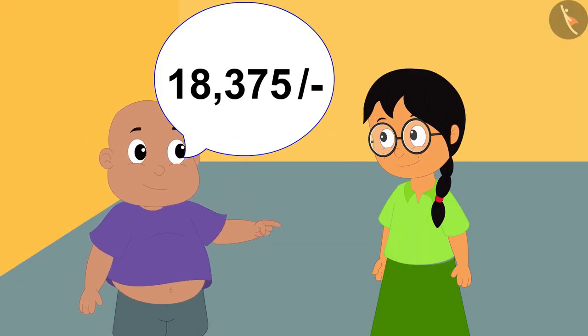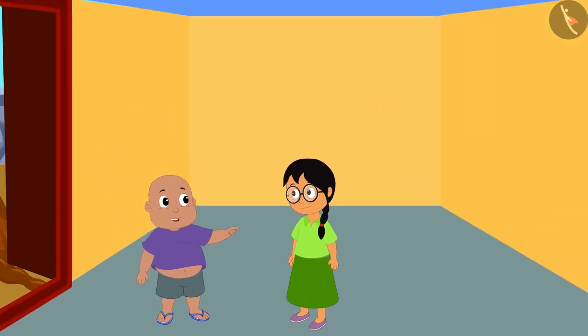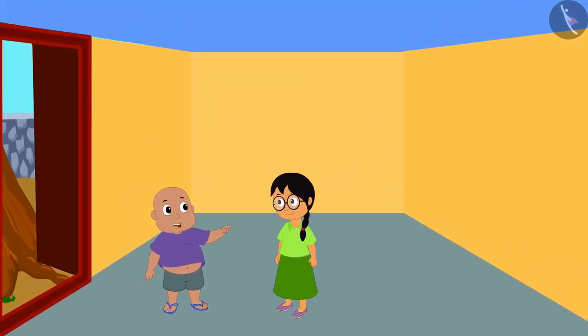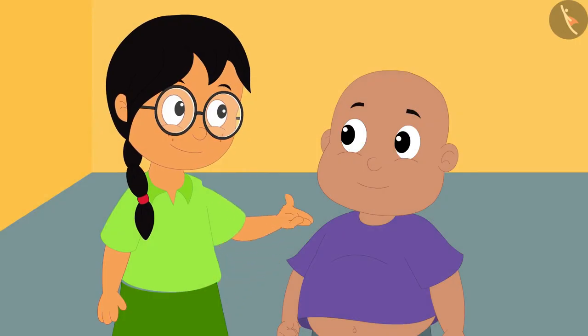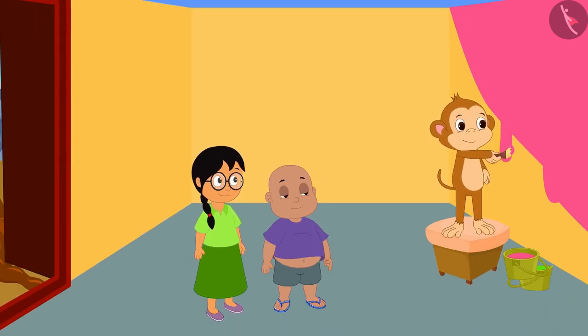So many rupees! Come on Meenu, we will take Bablu's help and paint these walls ourselves. He can paint these walls for us at a very cheap price, Bablu said to Meenu. Meenu liked Bablu's suggestion and both of them started painting the walls with Bablu's help.